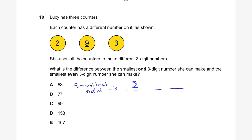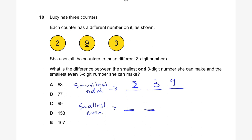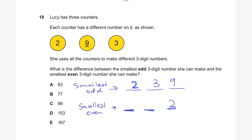To make the smallest even number: the ending must be even, and only two is even among the three digits. So we put two at the end and arrange the remaining digits to get the smallest number: 392. Now the difference: 392 minus 239. Two take away nine — we borrow, so 12 minus 9 is 3; 8 minus 3 is 5; 3 minus 2 is 1. The difference is 153, so the answer is D.